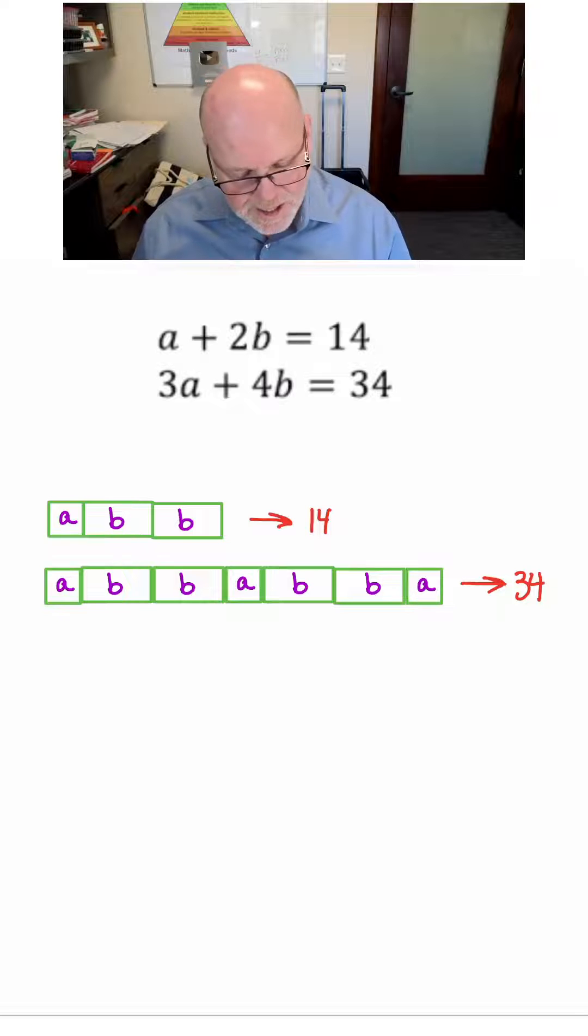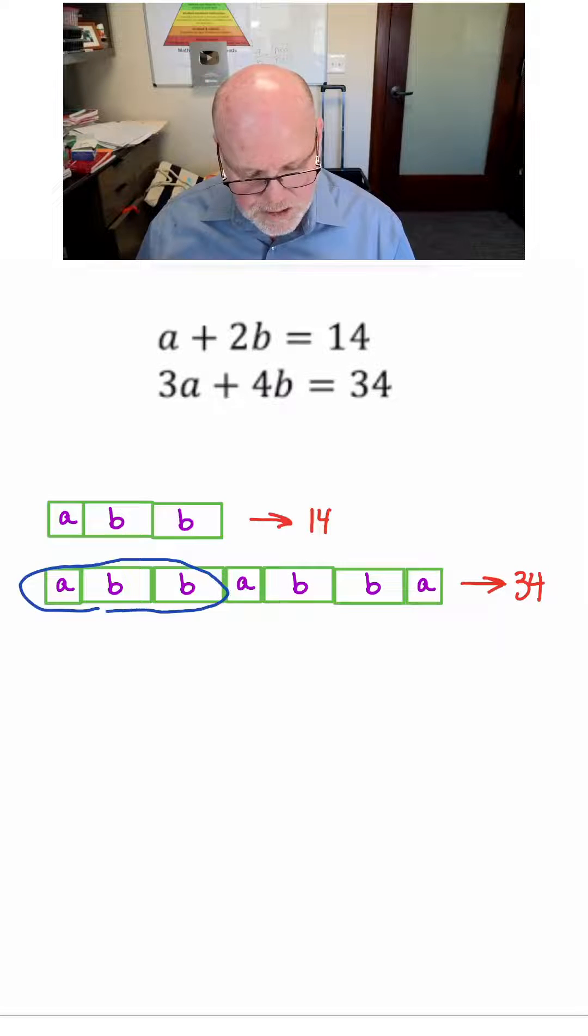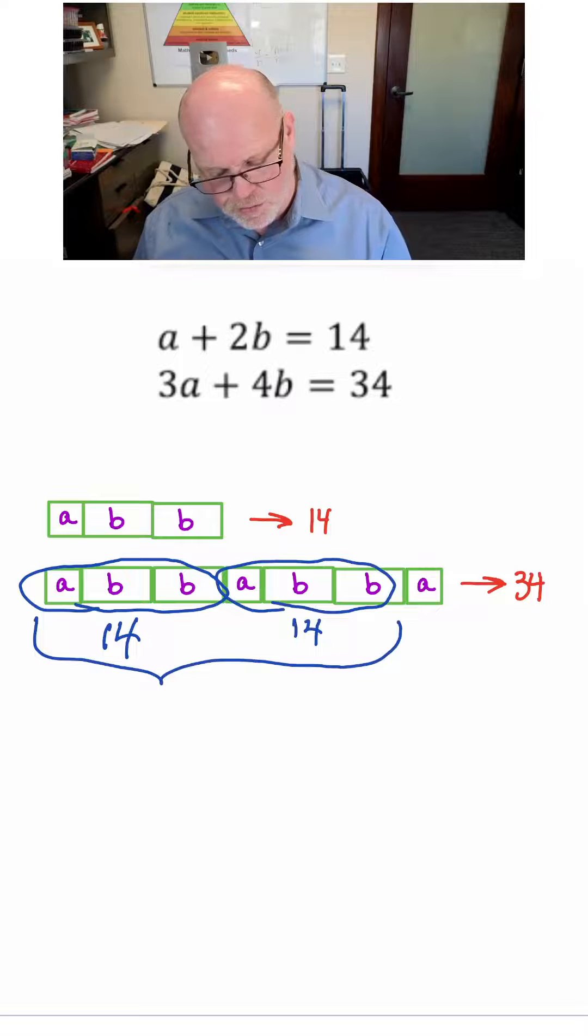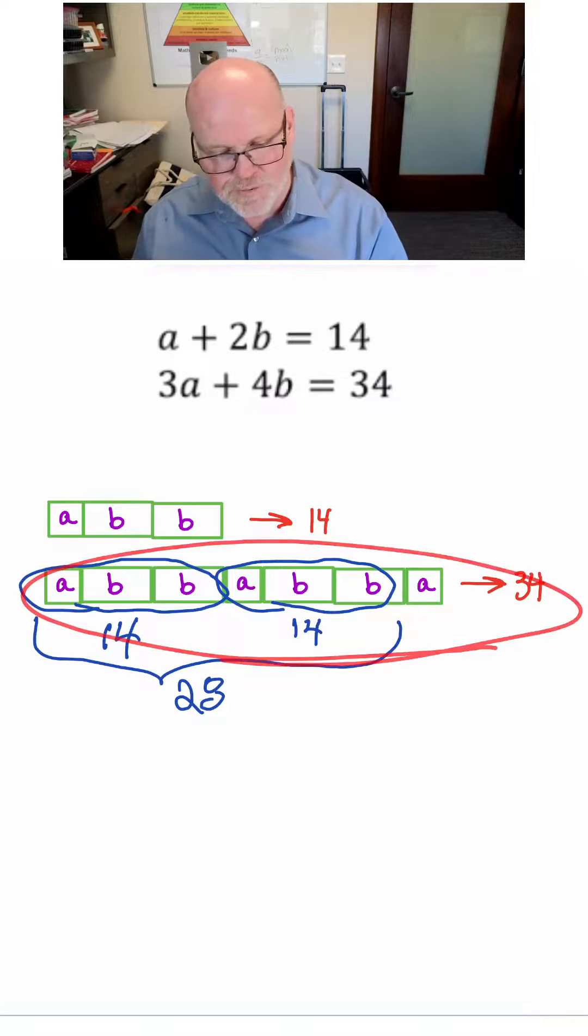But now we know that any time I see an A plus 2B, I can replace that with a 14. And I've got another A and another 2B and I can replace that with 14. So all of a sudden we have a total of 28, which means if we know that this entire thing has to be 34,